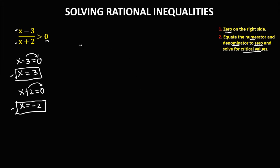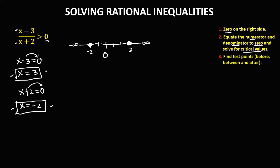Now place these critical values on a number line. We have x equals positive 3, so positive 1, positive 2, and positive 3. Then x equals negative 2, so negative 1 and negative 2. These are the two critical values, with negative infinity on the left and positive infinity on the right.